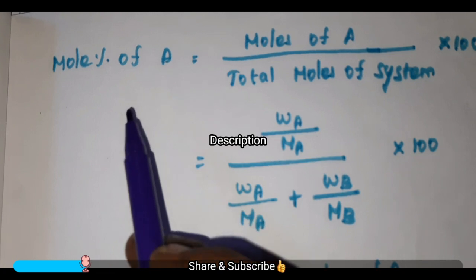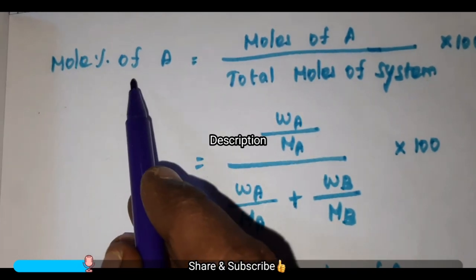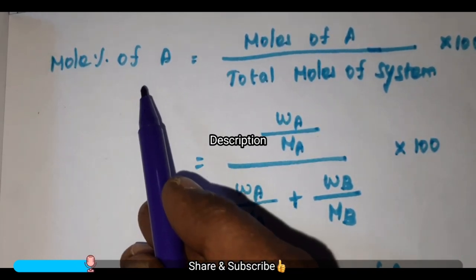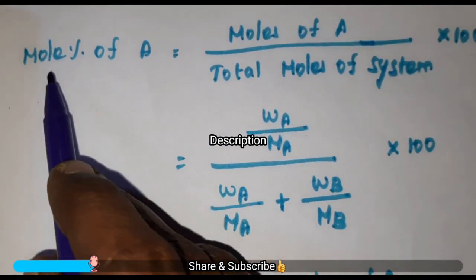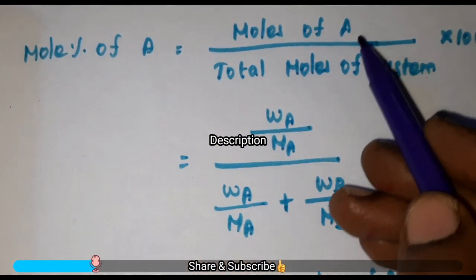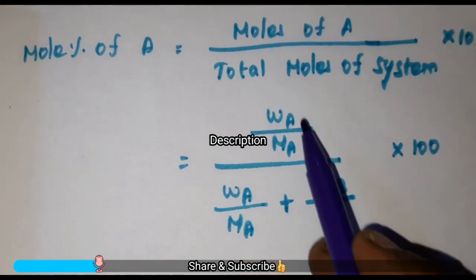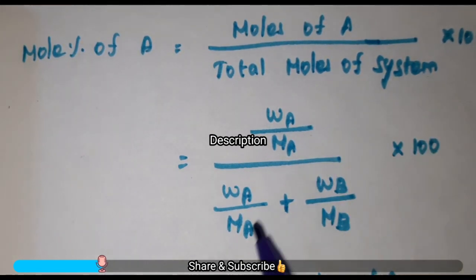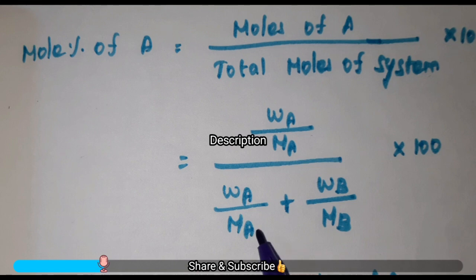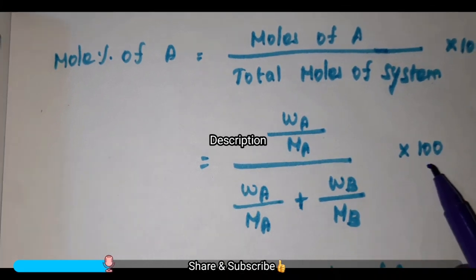Till now we have seen weight percentage and weight fraction. The next one is mole percentage and mole fraction. Mole percentage of A is nothing but the number of moles expressed as a percentage of the total moles of the system. The formula to calculate mole percentage of A is: moles of A divided by total moles of the system. The formula to calculate moles is weight of A divided by molecular weight of A. So total moles of the system is the sum of moles of components A and B: W_A divided by M_A plus W_B divided by M_B, into 100.